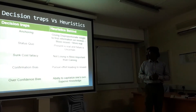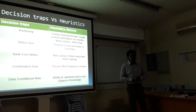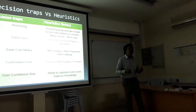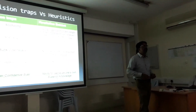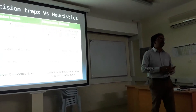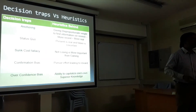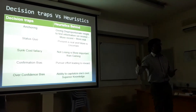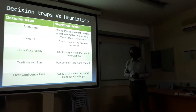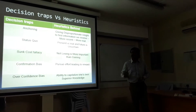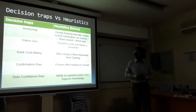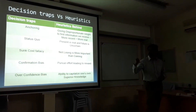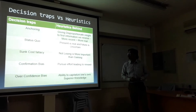Overconfidence bias is the tendency of a person to capitalize on their own perceived superior knowledge. In most cases, even experts will make wrong decisions as a result, leading to major losses. These examples illustrate how heuristics influences our decision-making process.